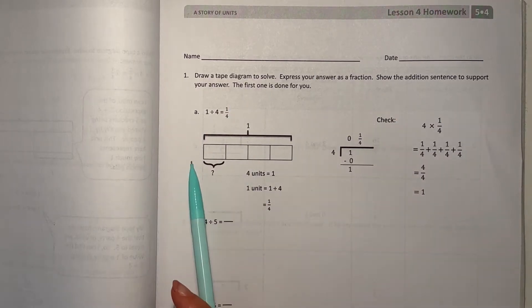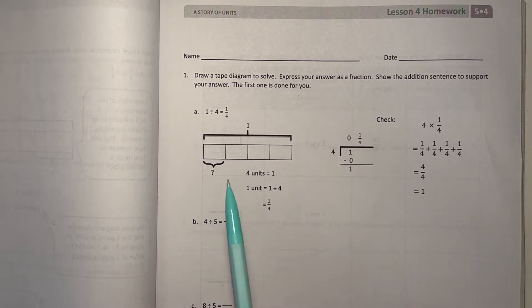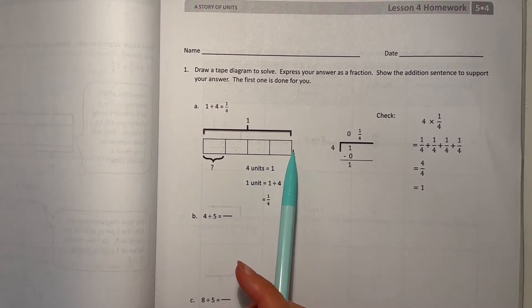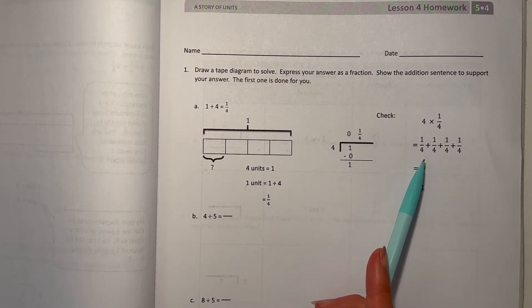So first one, they have 1 divided by 4, which is 1 fourth, 1 over 4. So they drew the 1 divided into four pieces. So it's saying four units is equal to 1. One unit is 1 divided by 4, which is 1 fourth. And they checked their work using long division, and they multiplied it and everything.